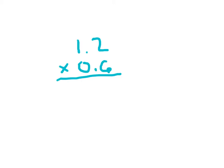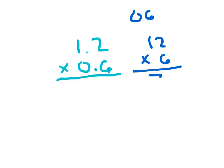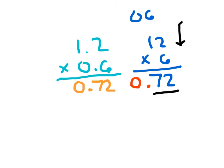Here we have 1.2 times 0.6, and we still have a 0 within our product. We ignore the decimal points to begin with — 0.6 is just 6 — so we're really just multiplying 12 times 6, which is 72. There's one decimal place in 1.2 and one decimal place in 0.6, so there should be two decimal places in our answer. Counting from the right: 1 and 2. I place my decimal point and also a 0, giving us 0.72.